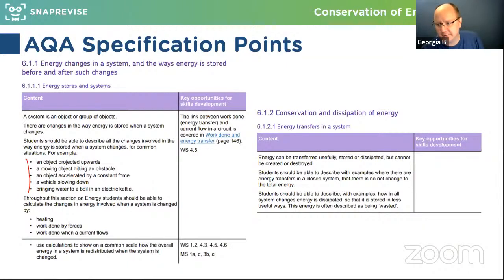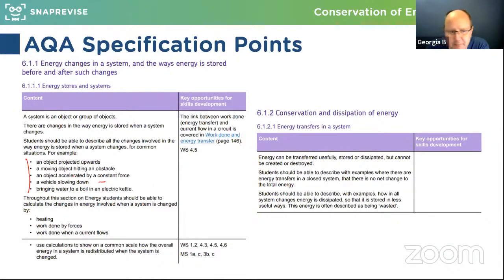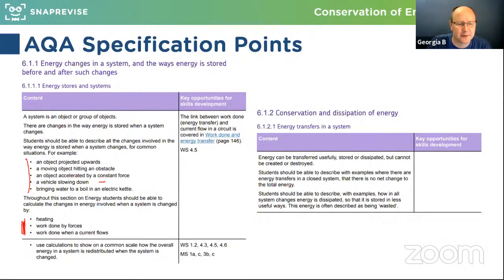So the energy of a moving vehicle is going to go into heat in the brakes — quite a large amount of energy, of course, if you think about the mass of a vehicle. And changes when you bring water to boil in a kettle, thinking about the main ways that energy is transferred: by heating, by doing work on something, and by doing work when a current flows in a wire. So electrical current is a very useful way of transferring energy.